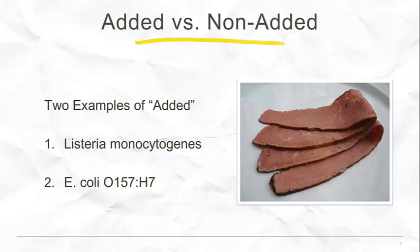The USDA FSIS gives two examples of what it means to be an added adulterant, particularly for RTE products. These two are naturally occurring — they're in the animal and we would expect them to some extent to be there. But FSIS has said that for listeria, scientific studies have shown that the pathogen is present in a product due to the way it is handled or produced. They give an example where there's recontamination through contact with the environment. If the product is not reheated, we've introduced listeria from the facility back into this RTE, and we don't expect the consumer to reheat it. So we've taken something naturally occurring, reduced it during production, and then re-added it.